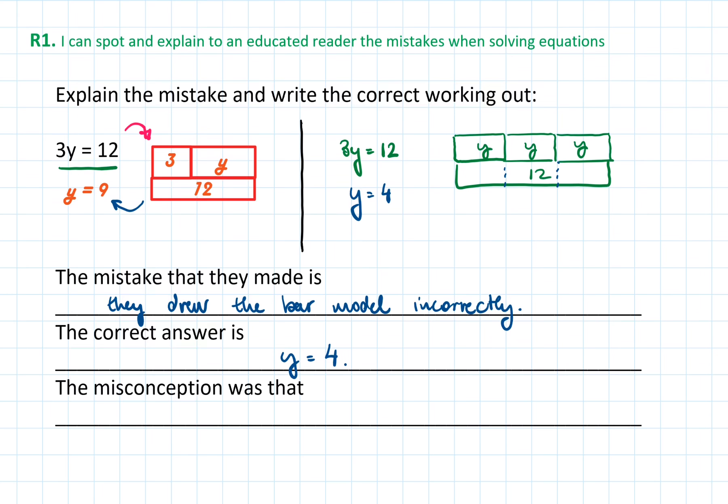Writing down the misconception is where the key part of the question is. You not just have to be able to spot the mistake, but you have to be able to explain where that mistake came from. So if you look at the incorrect solution bar model, the mistake was that they solved 3 and the y next to each other means addition instead of multiplication. So we can say the misconception was that they solved 3y means 3 plus y instead of 3 multiplied by y.